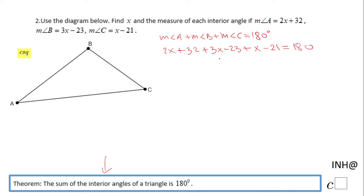2x, 3x, and x, that will be 6x. And then we have also to combine positive 32 minus 23 minus 21, and that will be minus 12, equals 180.